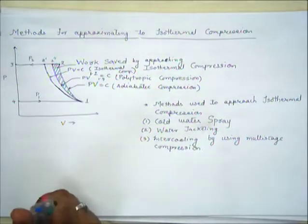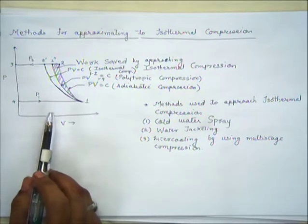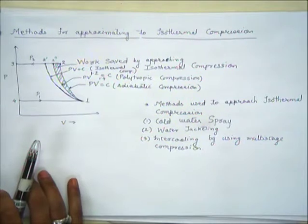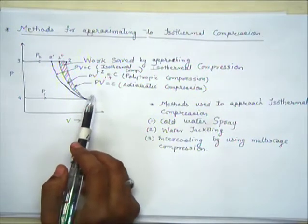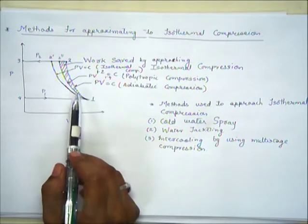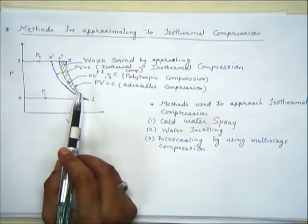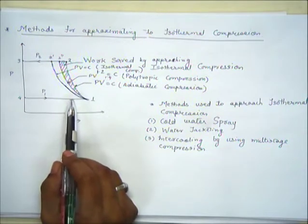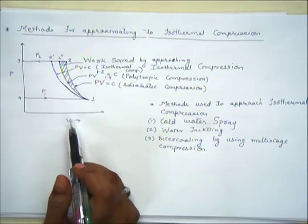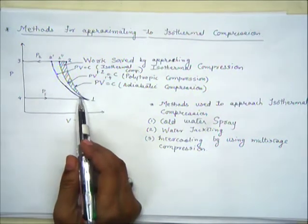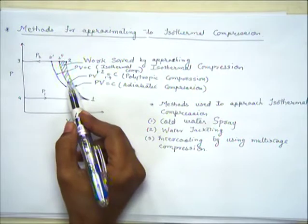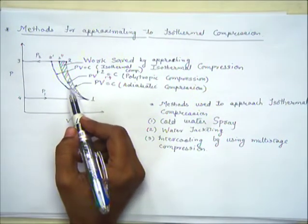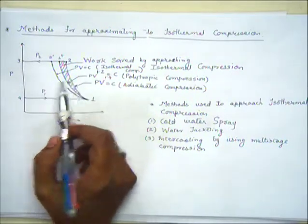In the last class we discussed the PV diagram for a single stage reciprocating air compressor, and that if we go for isothermal compression the efficiency of the compressor will increase. If the temperature is high, the molecules of air try to move away from each other, making compression difficult. So if we periodically reduce the temperature of air, it helps increase efficiency and reduces work requirement.